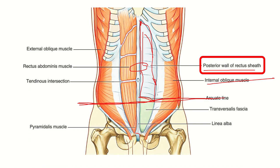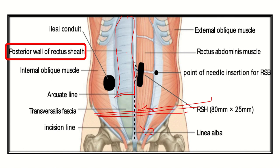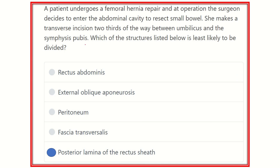The posterior layer of the rectus sheath will not be cut at this level. Below one-third of the distance from the umbilicus, it is not possible to cut this structure. As we can also see in this picture, the structure ends below the umbilicus at the arcuate line. At the level of the transverse incision — two-thirds from the umbilicus, one-third from the symphysis pubis — there is no chance of cutting the posterior layer of the rectus sheath. Therefore, our final answer is the posterior lamina of the rectus sheath.